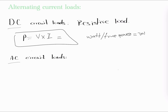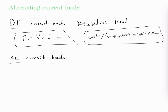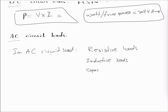In a DC circuit, watts always equal true power, equal to volt times ampere. That is true only for DC circuits. In an AC circuit, however, that's not true because we're not only having a resistive load. In an AC or alternating current circuit load, we have three different loads: resistive load, inductive loads, and capacitive load.